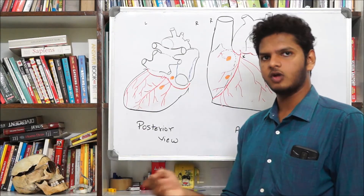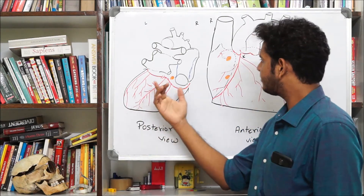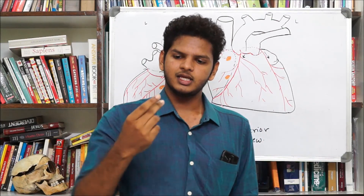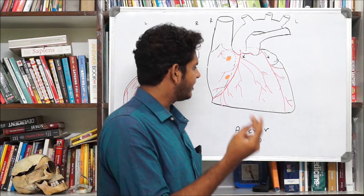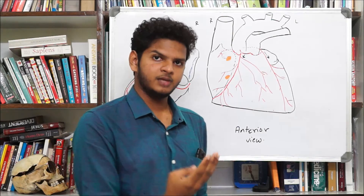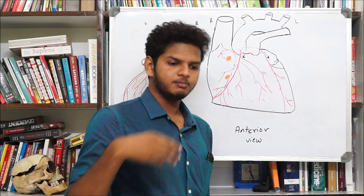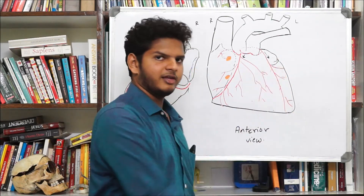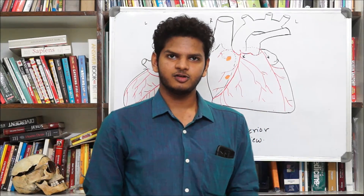The left coronary artery supplies the entirety of the left side of the heart: the left atrium, left ventricle, anterior two-thirds of the interventricular septum, the diaphragmatic surface posteriorly, and in 40% of people the sinoatrial node. It also supplies the bundle of His and the remaining conduction system. Next lecture will cover the veins of the heart.